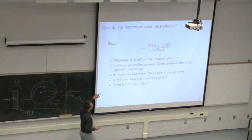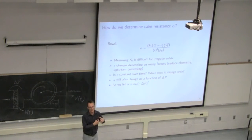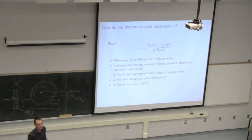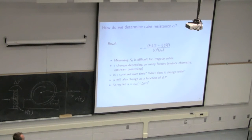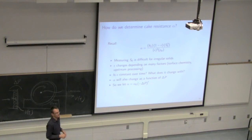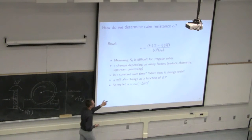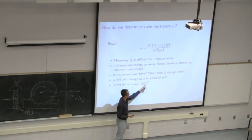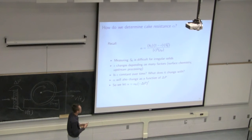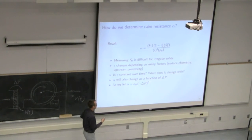S0, the specific surface area, probably won't change by very much — we assume it's mostly constant. But epsilon, the packing void fraction, will change with time depending on the chemistry of the solid surface, how repellent particles are to neighboring particles, and the pressure applied. As we apply greater pressure we force particles closer together and that void fraction changes. So we model alpha as: alpha equals alpha_0 times delta P raised to the power F, capturing its pressure dependency.